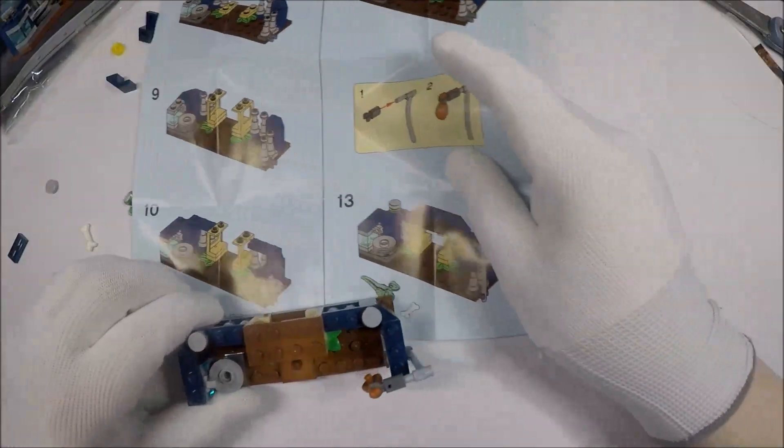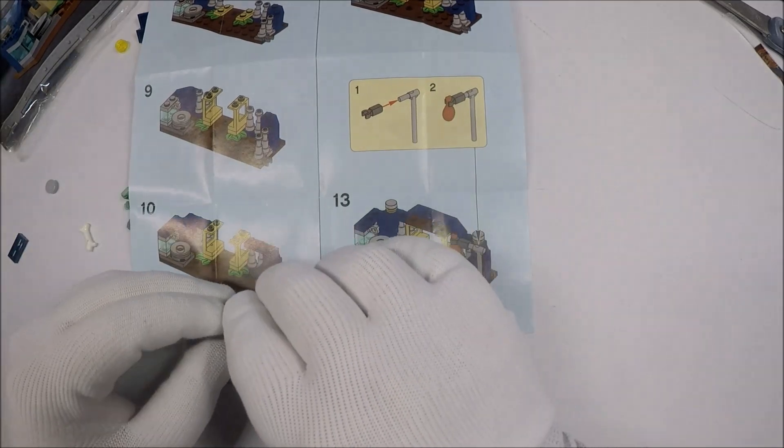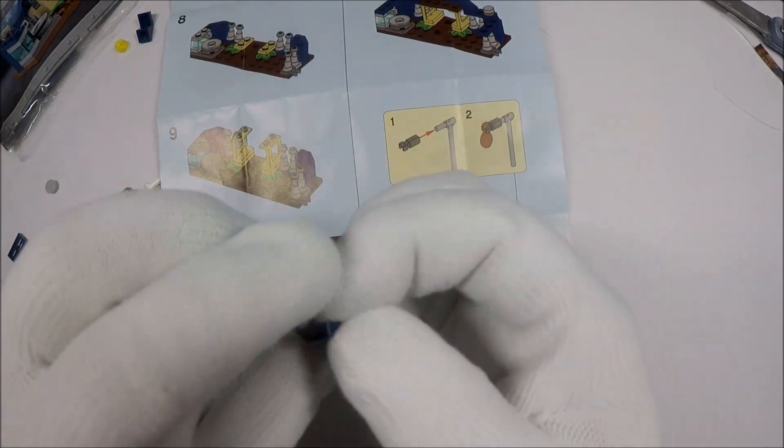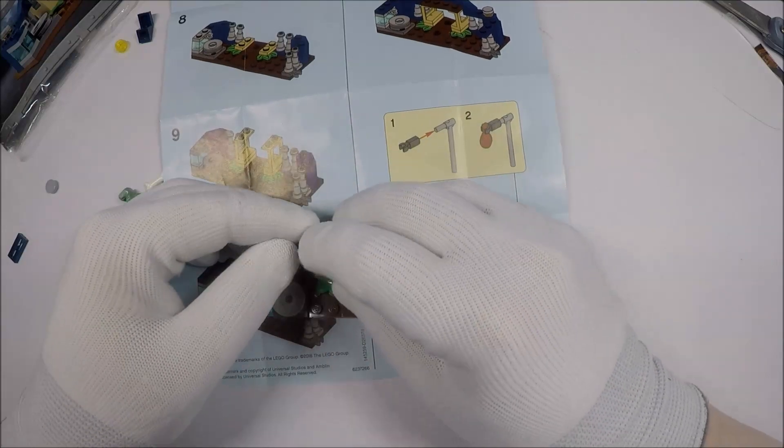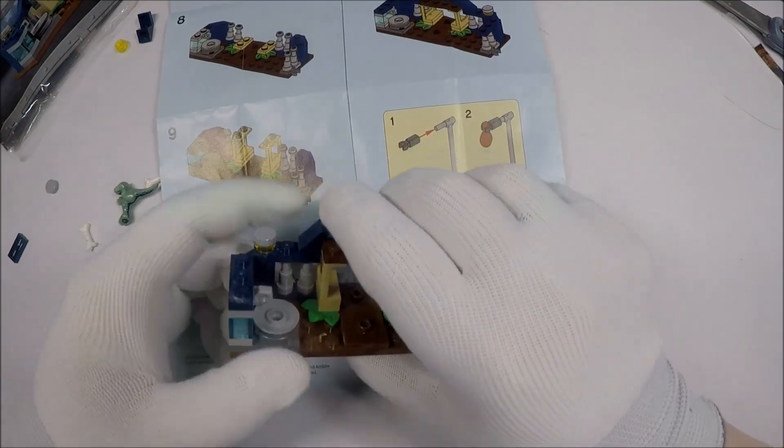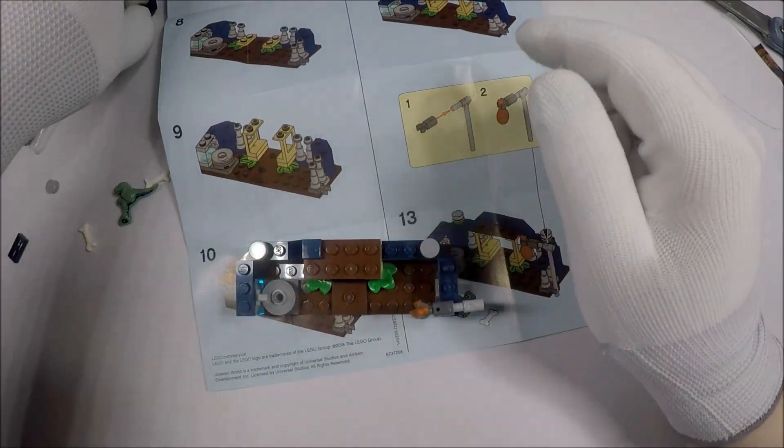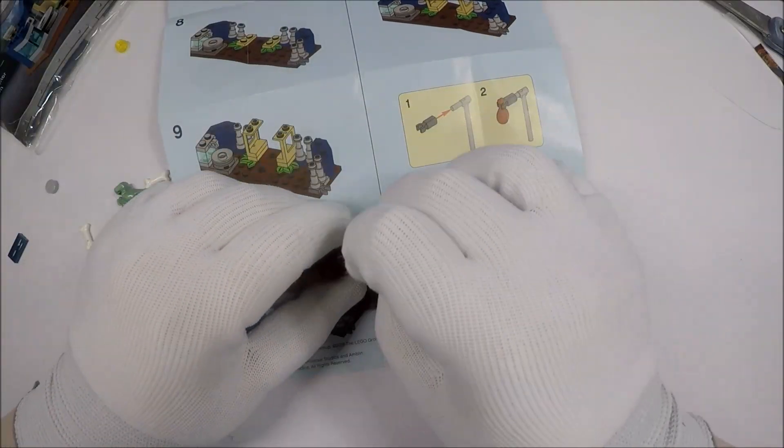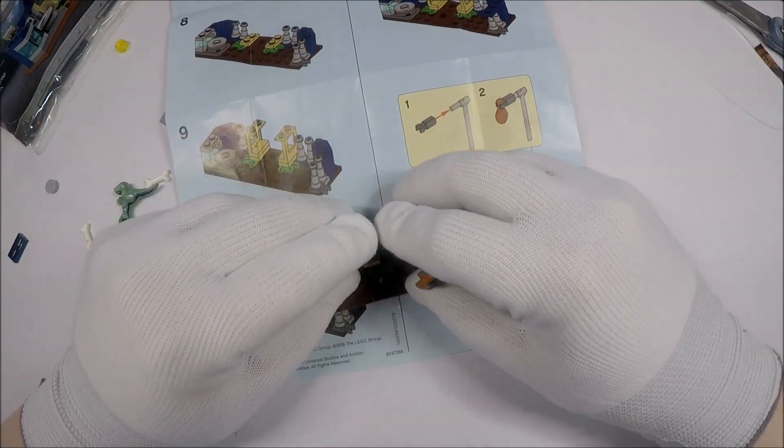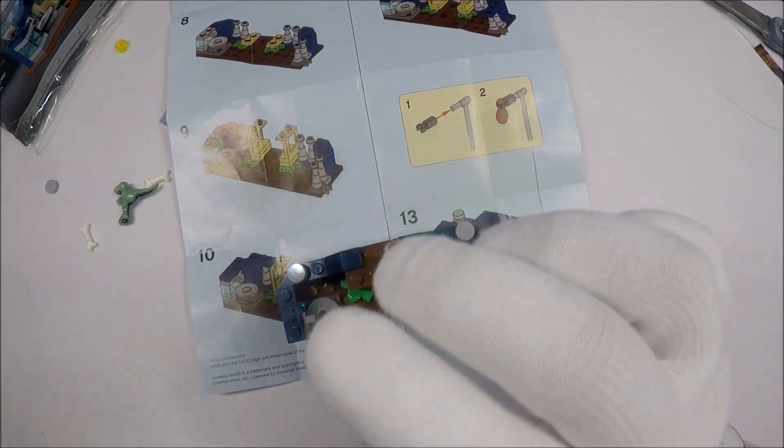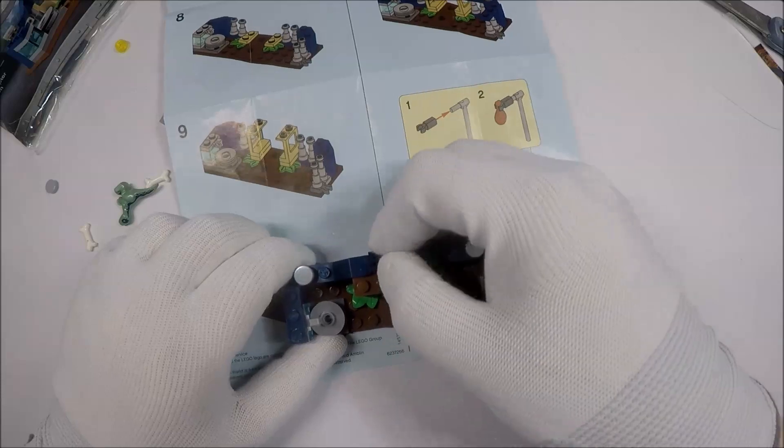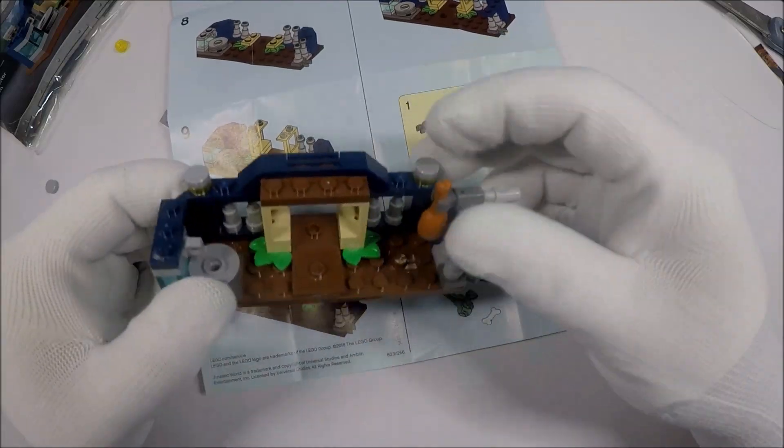And so the last thing we do is we add these two little pieces here. So this piece here. Whoops. This piece goes here. Maybe. Yeah. That piece goes there. And this piece goes here. And there's like a little vent that goes across the top. Like so.